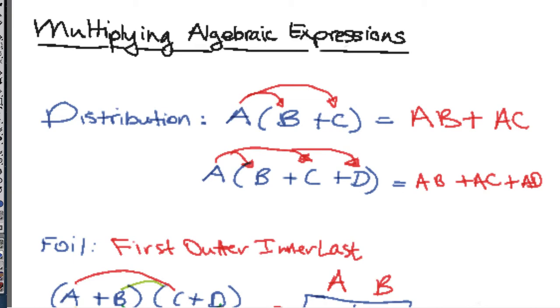Let's recap the properties real quick. If we are distributing something, what we're doing is taking each one of the terms inside the parentheses and multiplying it by the term outside the parentheses, whether it's two terms, three terms, or ten terms.